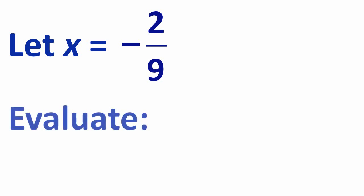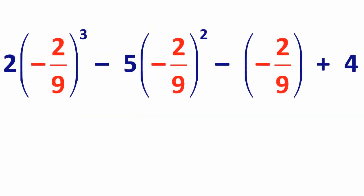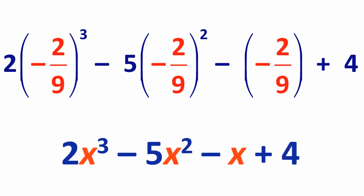For this next example, I want to let x equals negative 2 ninths. Then evaluate the following expression. One way of doing this on a calculator is to type in the following. Now, that's quite a bit to type in. So, one way to make things easier is to assign negative 2 ninths to the variable x. And then just type in the following expression. Let's see how this is done on a calculator.